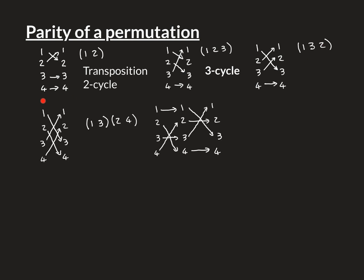One final example before we move on. In this permutation, 1 goes to 3 and 3 goes to 1, so 1 and 3 are transposed; and 2 goes to 4 and 4 goes to 2, so 2 and 4 are also transposed. This overall permutation is not a 4-cycle — it's two 2-cycles composed together. We write it as (1 3)(2 4), where the rightmost cycle happens first. So (2 4) is applied first, then (1 3) is applied, and following everything through confirms the overall permutation.